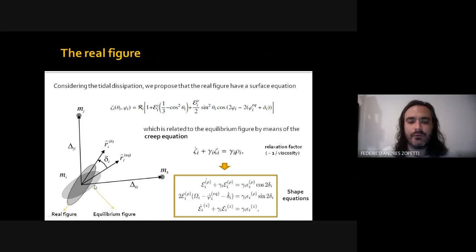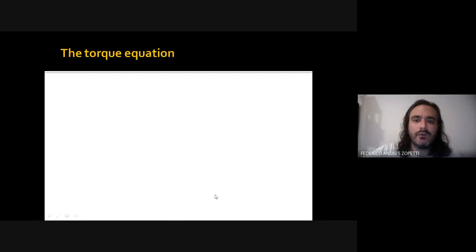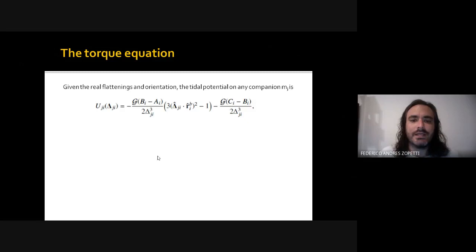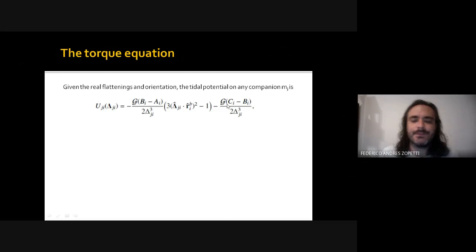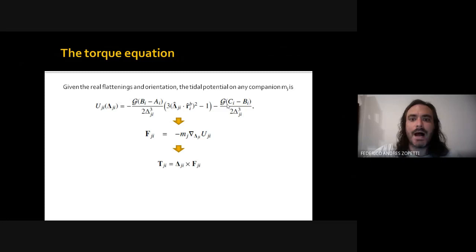Applying the creep equation, we obtain a set of three shape equations for each body. The shape is characterized by the real equatorial flattening, the real polar flattening, and the lag angle. If we calculate the tidal potential that each body generates on each companion, we obtain an expression for the tidal potential of an ellipsoid with inertia momenta a, b, and c, which can be calculated as a function of the flattenings. We also calculate the forces and torques applied on each companion.